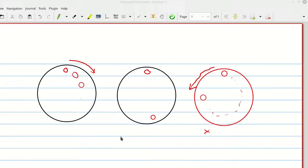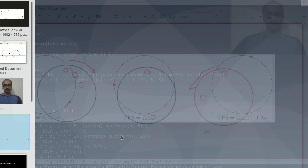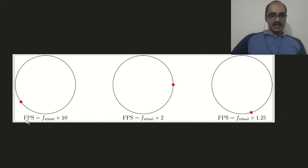Let's take an example of this. I have prepared an example for you. If you look at this, the FPS is frames per second, that is the number of frames captured per second, while f_wheel is the rate of rotations per second of the wheel.